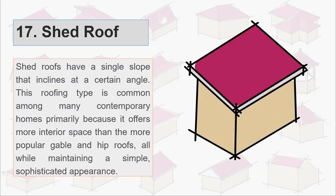Seventeenth is shed roof. A shed roof has a single slope that inclines at a certain angle. This roofing type is common among many contemporary homes primarily because it offers more interior spaces than the more popular gable and hip roofs, all while maintaining a simple sophisticated appearance.